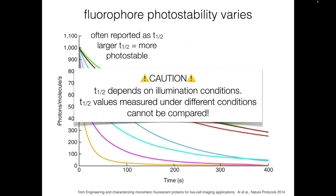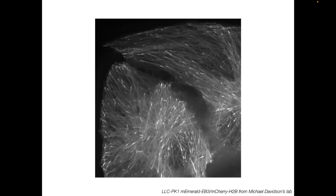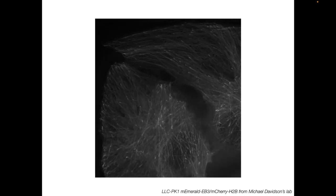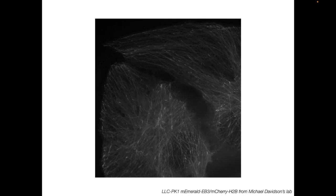Fortunately, what we care about most of the time isn't the absolute photostability of a fluorescent protein, but rather how it performs under the specific experimental conditions we will be using. The best way to determine whether a fluorophore is photostable enough for your experiment is to test it yourself. Returning to our photobleaching example: this is a time-lapse experiment where I've collected one image every second for about two minutes. By the end of the time lapse, the image is too dim to use and I can no longer detect the structures I'm interested in — so I'm limited in how many frames I can use.